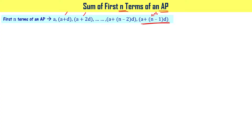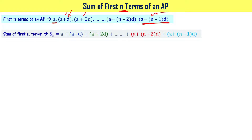We write Sn as the sum: a plus (a+d) plus (a+2d) plus ... the 1st term plus 2nd term plus 3rd term plus 4th term, and so on, up to the nth term a+(n-1)d.